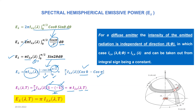At this point it is important to note that the intensity of radiation also depends upon temperature. Until now we have stated dependence on lambda, theta, and phi. But whether it is a diffuse emitter or a real surface, the intensity of radiation will also depend upon the temperature T.